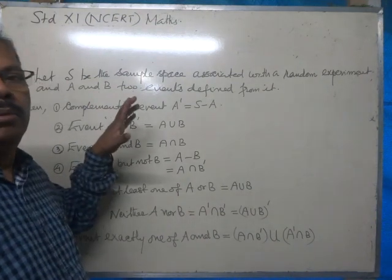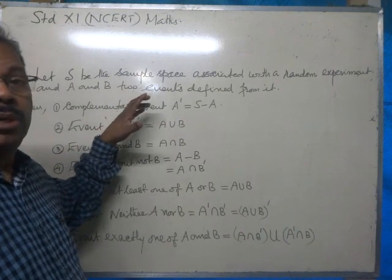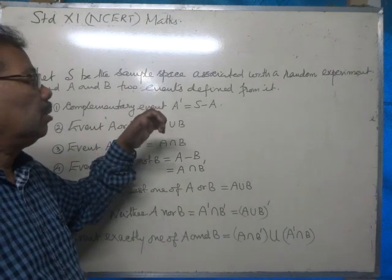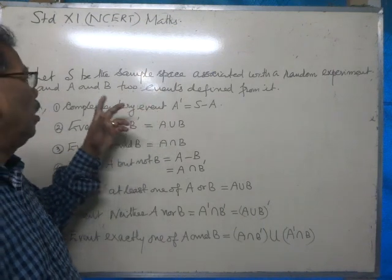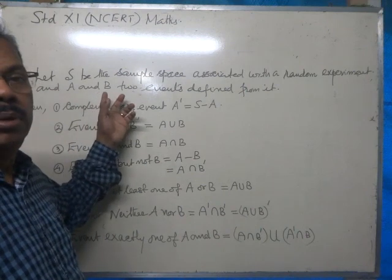We have a sample space associated with a random experiment and two events, A and B, defined from it.